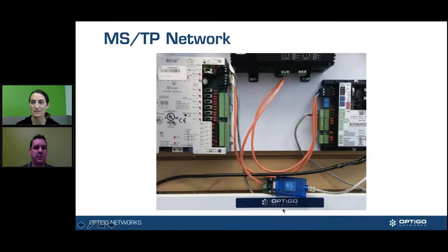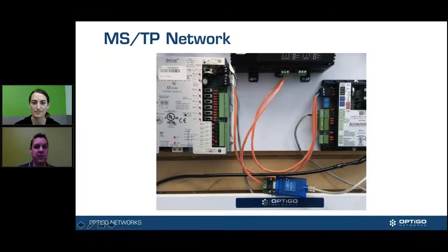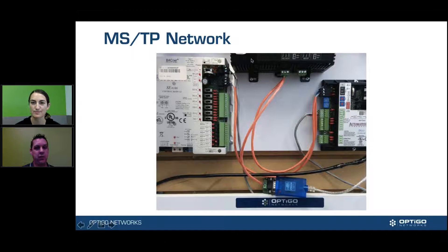Most MSTP networks always have a certain level of issues. Very rarely do you install one without a couple of issues. Typically what you have is a physical wiring problem — bad wiring or bad terminations. Possibly you have a device issue, an actual controller issue, but that's rare. You also have bad configurations for MSTP settings, but typically what you're focusing on is wiring problems.